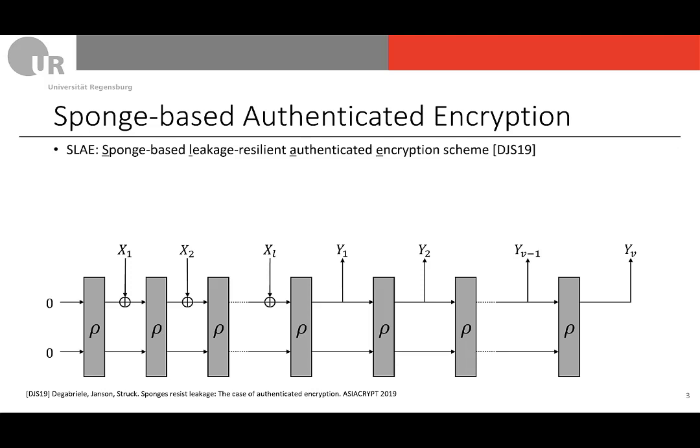You have some function or permutation ρ mapping from n bits to n bits. In the first part, the absorbing phase, we absorb an input x1 to xl by XORing it r bits at a time to the first r bits of the n-bit state, and then applying the function or permutation ρ. Afterwards, in the squeezing phase, we generate an output by always taking the first r bits of the state and then applying ρ again.